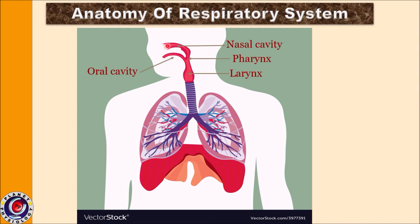We take in air from the atmosphere into the lungs through the nose, and we exhale also through the nose. But the oral cavity can also perform this function. Both the nasal cavity and the oral cavity are parts of the respiratory system, and posteriorly they are united to form the pharynx.